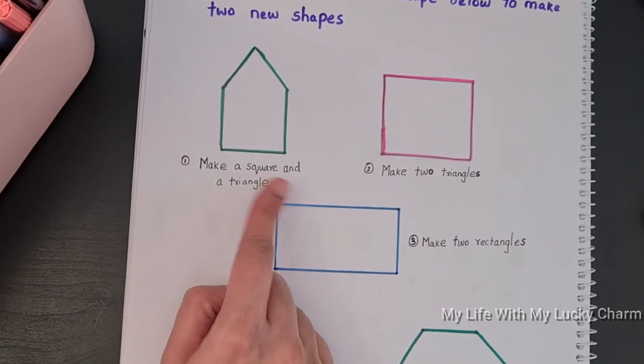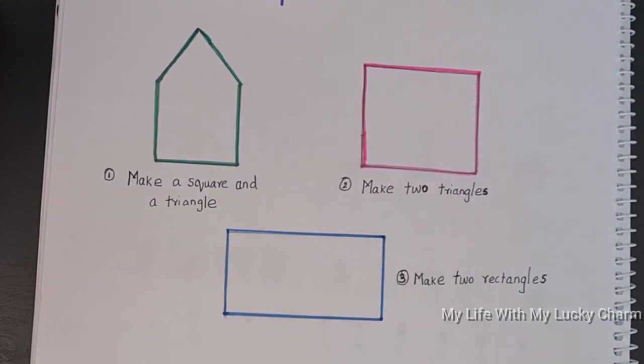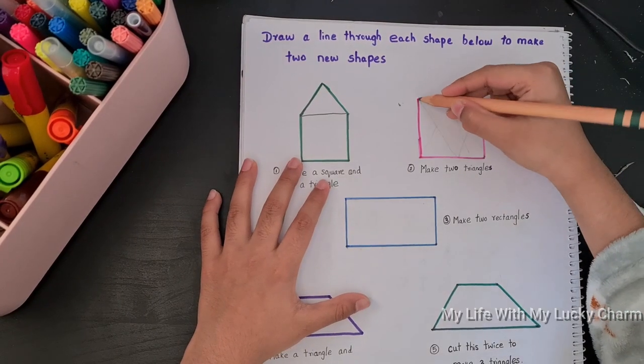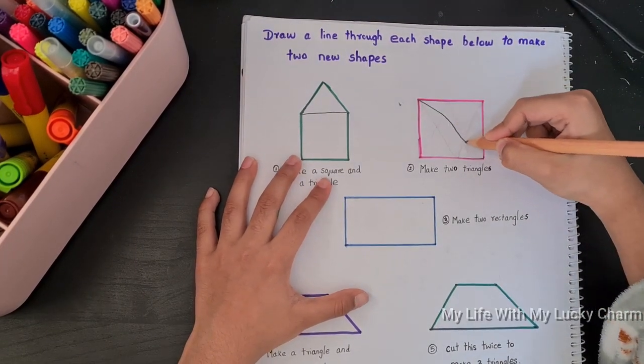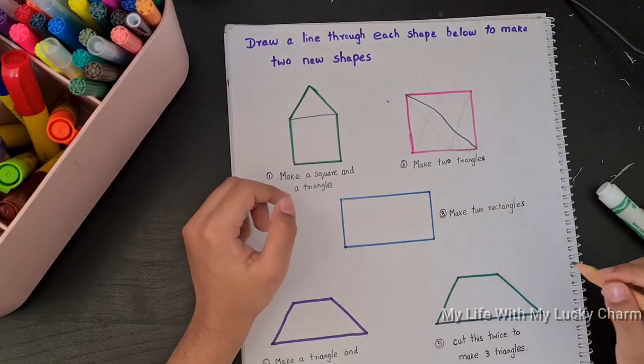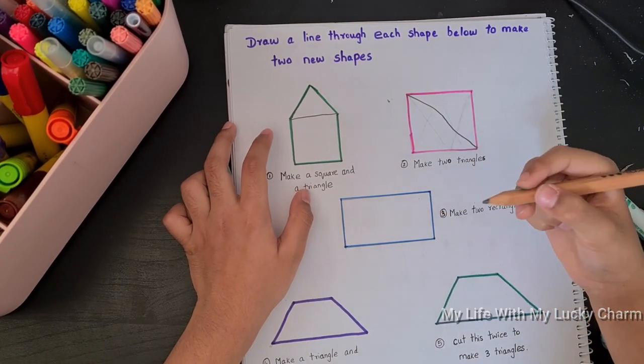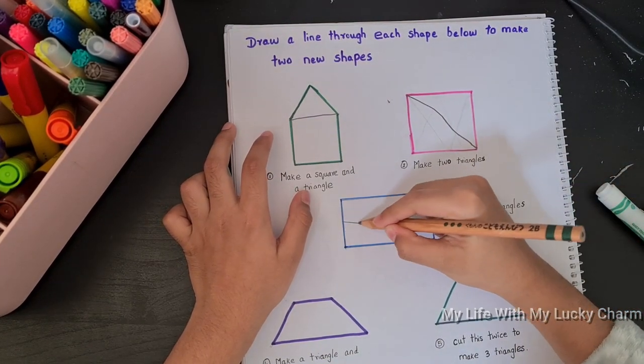So are you ready? Yes. Okay, so I am going to... one, awesome baby. Two cross, make two rectangles. Make two rectangles, too easy.